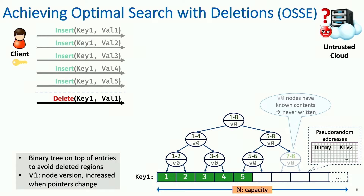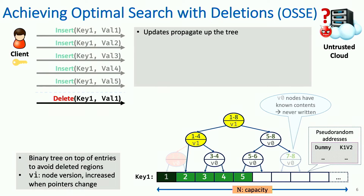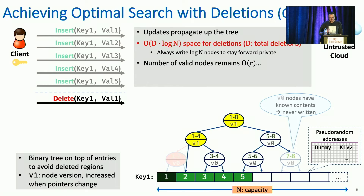If the client decides to delete the first value, we go ahead and remove the node on top of the first two values — on top of the leaf that is going to be deleted — and then point the grandparent of the deleted leaf to its sibling, retaining that sibling as a valid node. When we say deleted, we write it to a new location and never read the previous one. So when the version changes and the address changes — for node 1.4 in this example — the pointer from the node above no longer works, so we have to write that again. Each update means writing log n nodes to maintain forward privacy, giving us a log n blowup for deletions, which means super-linear space. But as a result, the number of valid nodes in our tree remains order of R, and therefore we can achieve optimal search.